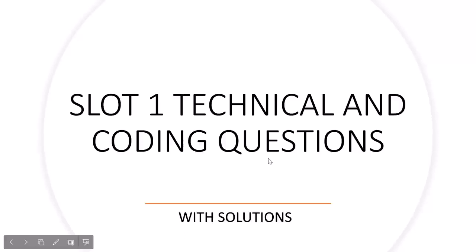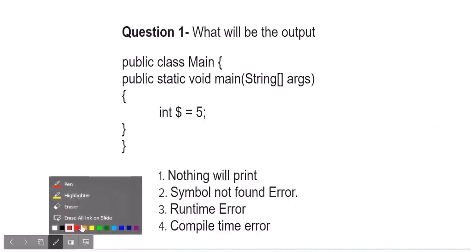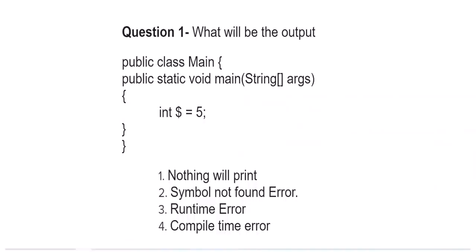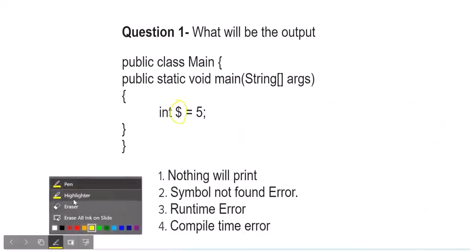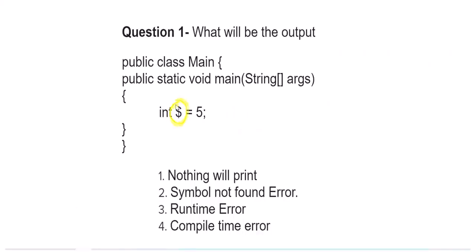Without wasting much time, let's move ahead. Question 1 is related to Java. You can see there is no syntax error, but you might think this is wrong because of the dollar sign. We learned that only underscores can be in variable names, but that is only in C and Python. In Java, a dollar sign can also be a valid variable name. Since nothing is printing, the correct output is that nothing will print.